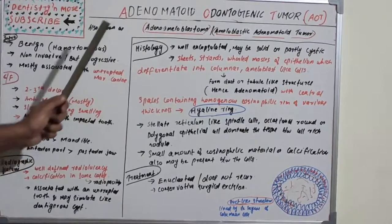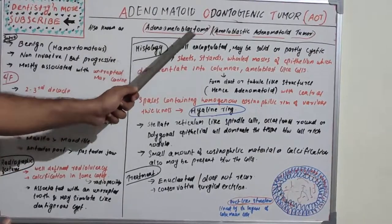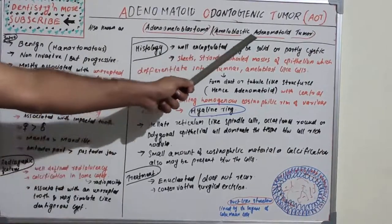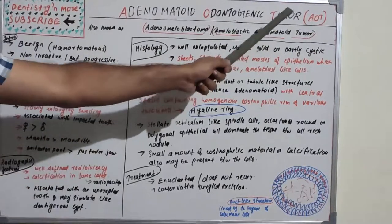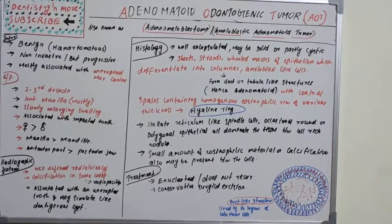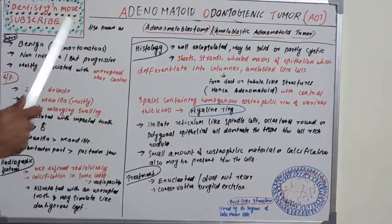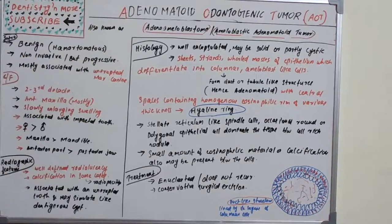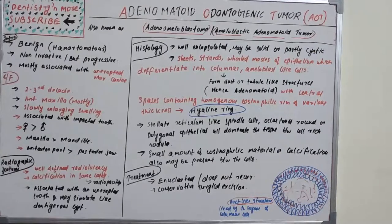AOT is also known as adeno-ameloblastoma or ameloblastic adenomatoid tumor. It was sometimes in the past misdiagnosed as ameloblastoma, which is why it got the name adeno-ameloblastoma. Therefore, one of the differential diagnoses is ameloblastoma.